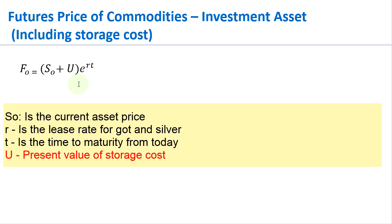Then you multiply the whole thing by the exponent of the risk-free interest rate times the time to maturity. R represents the lease rate, and sometimes in some questions you will not be given the lease rate, but you would be given the risk-free interest rate, and in that case you can also use the risk-free interest rate.